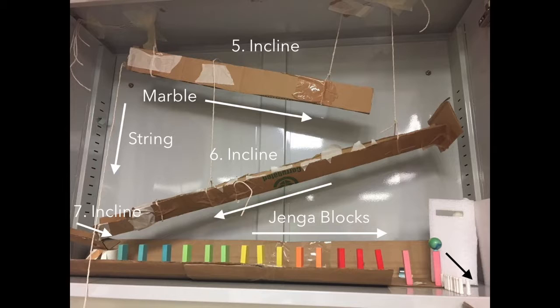Moving on, the marble hits a Jenga block located at the end of the last incline plane, knocking over the rest of the Jenga blocks in a row. The last Jenga block has a marble balanced on top, so when it falls, so does the marble.